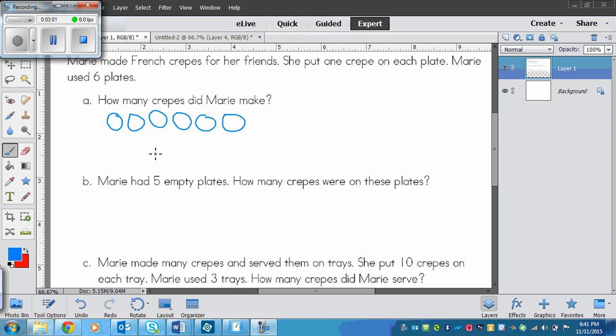So I drew six plates, and then if I drew one crepe on each picture, and those are, we're just going to draw smaller circles for those. So I put one on each plate. Now, how many red circles do I have? One, two, three, four, five, six. So that means I have six crepes. Okay, that's my answer.